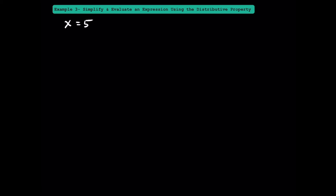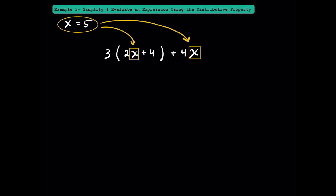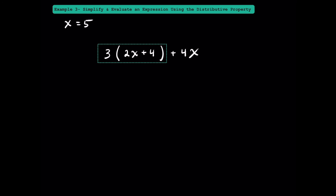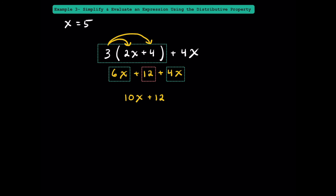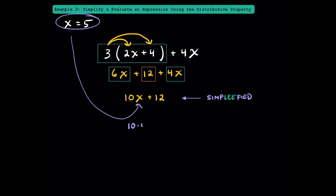Now let's go one step further — the value of x is going to equal 5. We'll simplify an algebraic expression using the distributive property and then evaluate it when x equals 5. After using the distributive property, we combine 6x and 4x to get 10x, and 12 is our only constant. Our simplified expression is 10x plus 12. Substituting x equals 5: 10 times 5 plus 12 gives us the value of our expression when x equals 5.